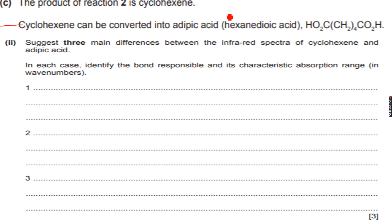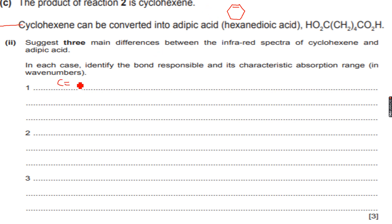Let's draw cyclohexene before we do anything else. Cyclohexene has one alkene group. Now, to find three differences in the bonds between these two compounds: one difference is that cyclohexene has a carbon-carbon double bond, but adipic acid, which is hexanedioic acid, does not have any carbon-carbon double bonds.